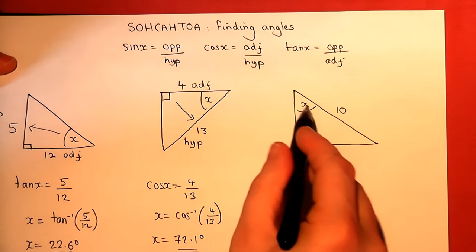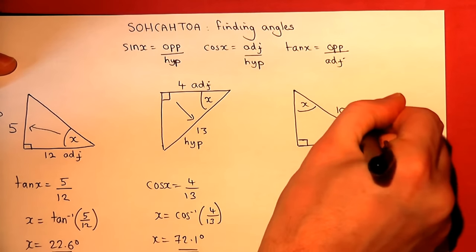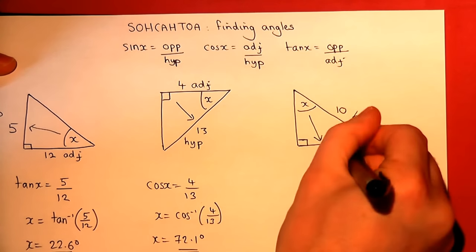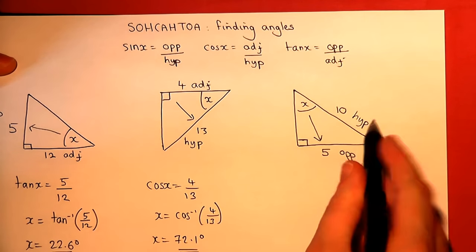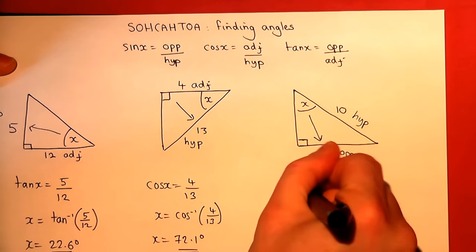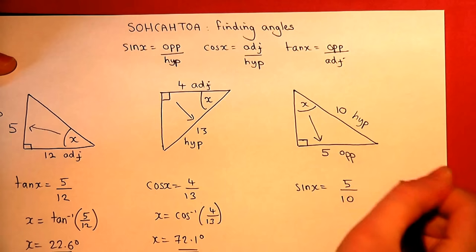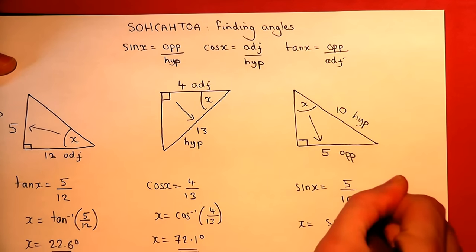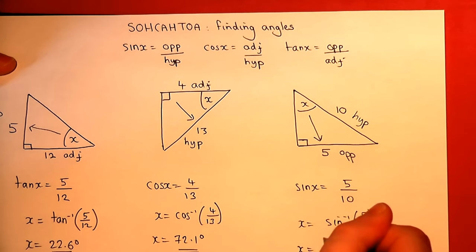The final one — that side is the hypotenuse, and this side is opposite the angle, so that's the opposite. Opposite and hypotenuse means we use the sine equation. So sine of x equals opposite over hypotenuse. To find x, we do the inverse sine of 5 over 10, or a half, and we get x equals 30 degrees.